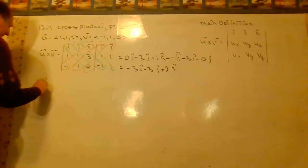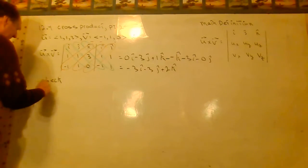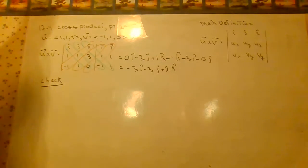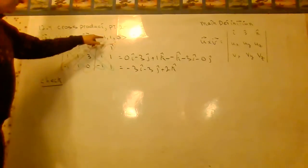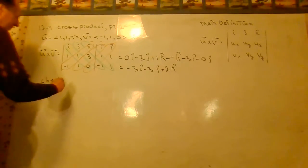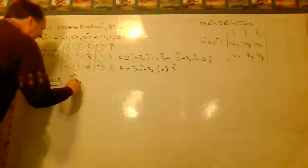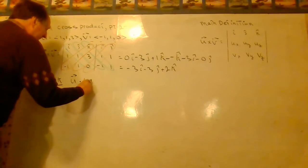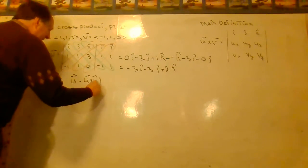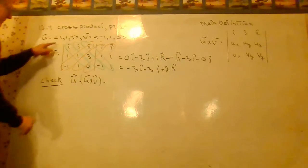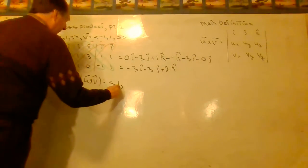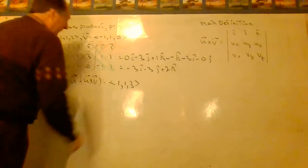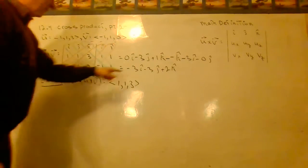Now let's go ahead and check. This should be mutually perpendicular to both this and this. So let's check U dot U cross V. And we got 1, 1, 3 times this factor.